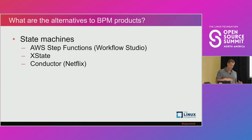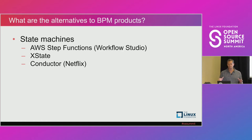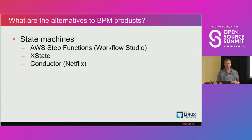Now, what are some of the alternatives? Because like anything in tech, one size does not fit all. There may be cases where a BPM product is overkill. Some alternatives to explore are state machines, which may not be as detailed with the visual workflow. AWS Step Functions has a workflow studio that is a visual modeler but does not use BPMN notation. Others are XState.io, which is a JSON-based workflow, and Netflix has a Conductor project that can be used for orchestration.